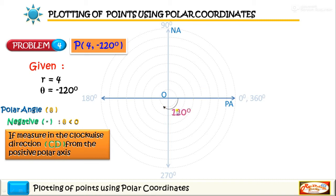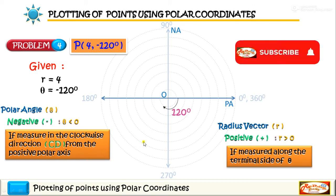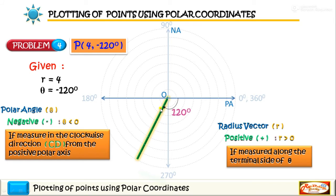So that is 120. And R is equal to 4 and that is positive, that is greater than zero. We will measure the radius vector 4 along the terminal side of that angle. So we will draw a line here, okay, from the pole. And then on this line, we will measure, we will lay off 4 units distance starting from the pole.